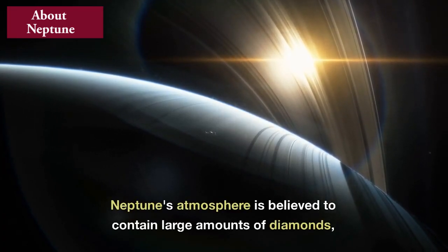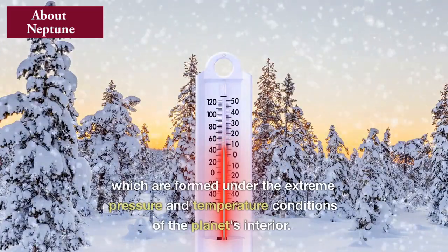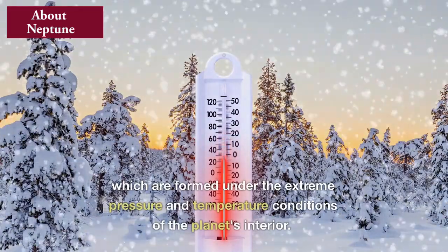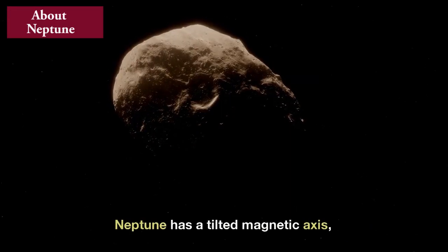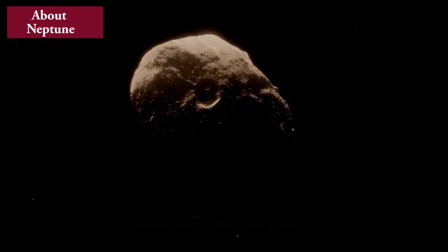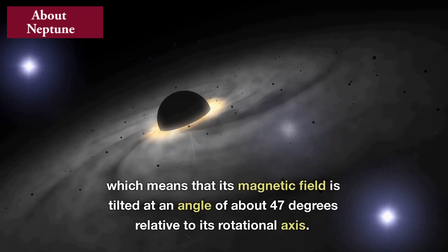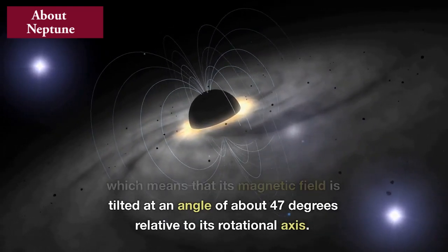Neptune's atmosphere is believed to contain large amounts of diamonds, which are formed under the extreme pressure and temperature conditions of the planet's interior. Neptune has a tilted magnetic axis, which means that its magnetic field is tilted at an angle of about 47 degrees relative to its rotational axis.